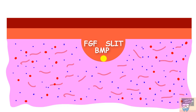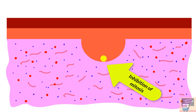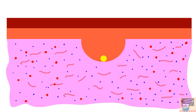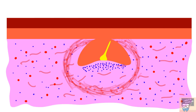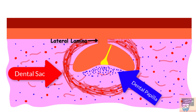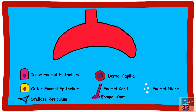The primary enamel knot is responsible for inhibition of mitosis, and this results in a depression in the developing tooth germ, marking the transition from bud to cap stage. The cap stage is marked by the beginning of morphodifferentiation as the shape of the enamel organ changes from bud to cap shape.